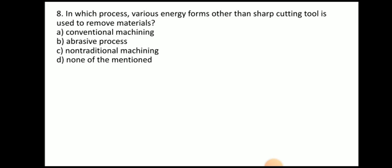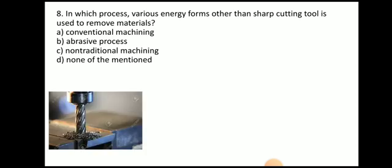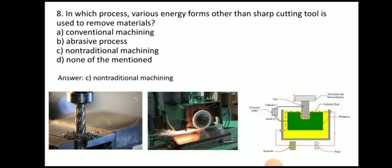Next question: in which process are various energy forms other than a sharp cutting tool used to remove material? The answer is non-traditional machining. In milling and grinding, a cutting tool is used. But in non-traditional machining, a sharp cutting tool is not used — other forms of energy are used to remove the material.